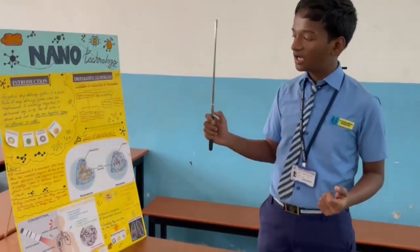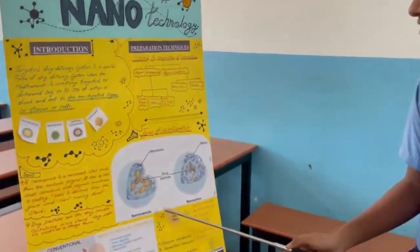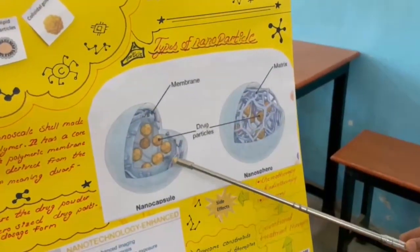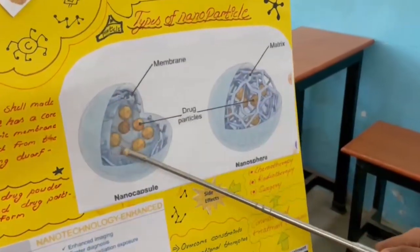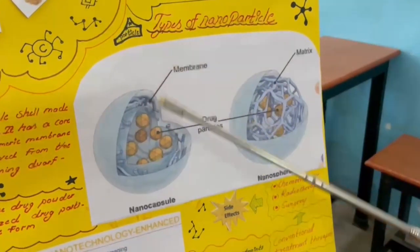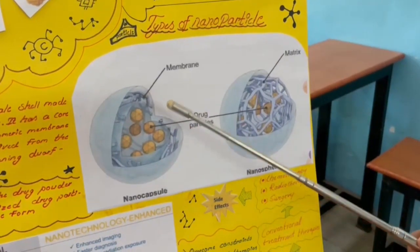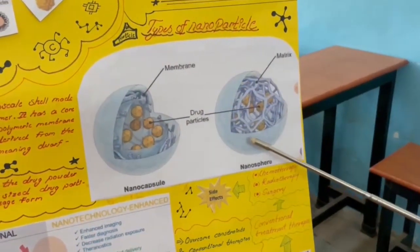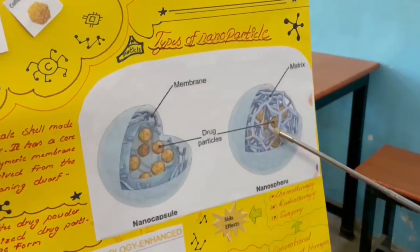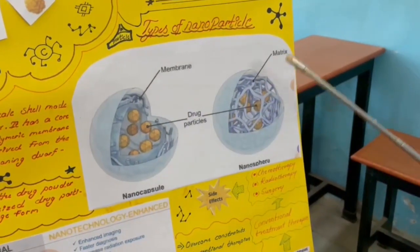Now we are going to see how the nanoparticle really does its work. There are two types of nanoparticles: nanocapsule and nanosphere. This is the outermost covering of the nanocapsule. Inside it is its membrane — this web-like thing. And this is the innermost shell, and inside it we have the one who does the real work: the drug particles, which kill the cancer tumor. In a nanosphere, we have the outermost covering, the web-like matrix, and directly we get the drug particles. In a nanocapsule we have the innermost covering, but in a nanosphere we don't.